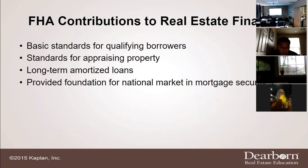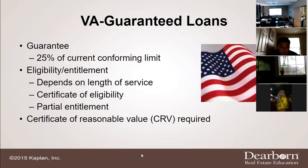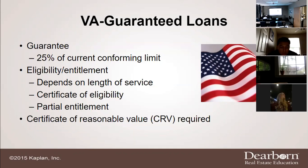Regarding VA guaranteed loans, there is a guarantee of 25% of current conforming limits. Eligibility and entitlement are very important in VA loans. It depends on length of service — if you only serve the minimal stint, you may not be able to qualify very soon for a VA loan. And even if you're in the service for 35 years but are dishonorably discharged, you won't be able to get that VA loan.